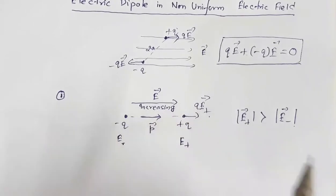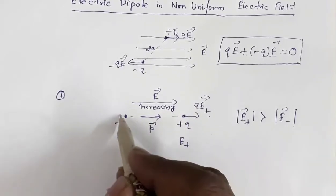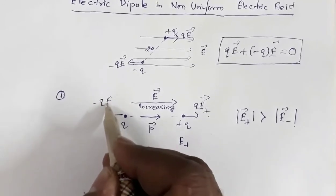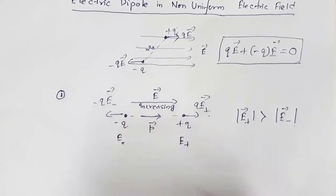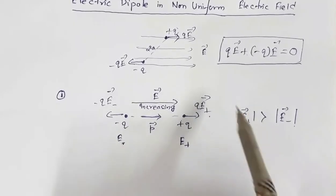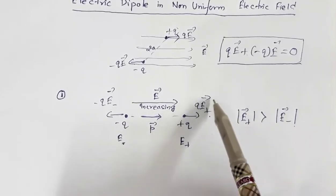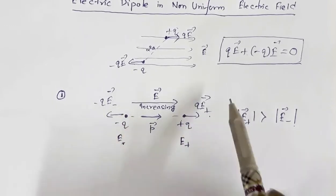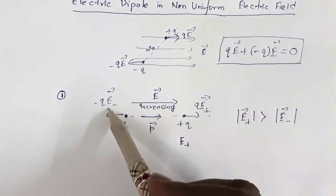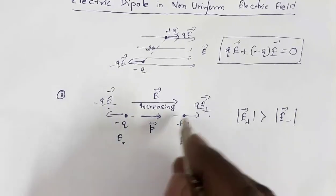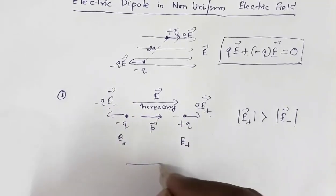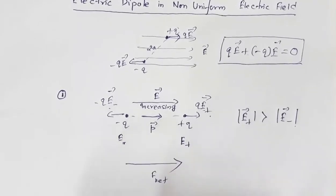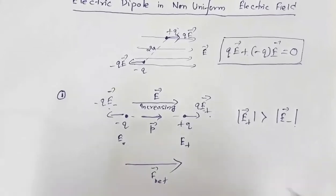The negative charge will experience a force -QE-minus in the opposite direction. Since the magnitude of the electric field at the position of the positive charge is greater than at the negative charge's position, the force on the positive charge will be greater. So this dipole will experience a net force in this direction — the direction of increasing field.